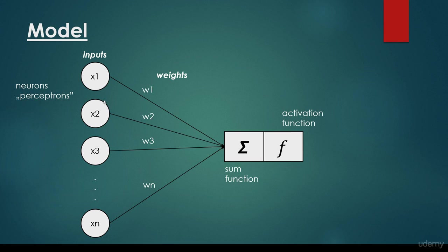So we have the input with some values — x1, x2, x3, up to xn — and all of these neurons have some connection, some edge, and we can assign an edge weight to every single edge. So this first input has the first edge weight, this second input has the second edge weight, and so on.